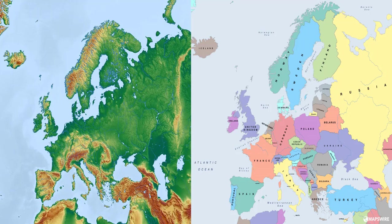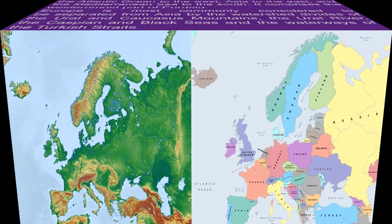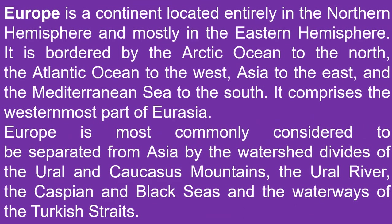Europe is a continent located entirely in the northern hemisphere and mostly in the eastern hemisphere. It is bordered by the Arctic Ocean to the north, the Atlantic Ocean to the west, Asia to the east, and the Mediterranean Sea to the south. It comprises the westernmost part of Eurasia. Europe is most commonly considered to be separated from Asia by the Ural and Caucasus Mountains, the Ural River, the Caspian and Black Seas, and the waterways of the Turkish Straits.